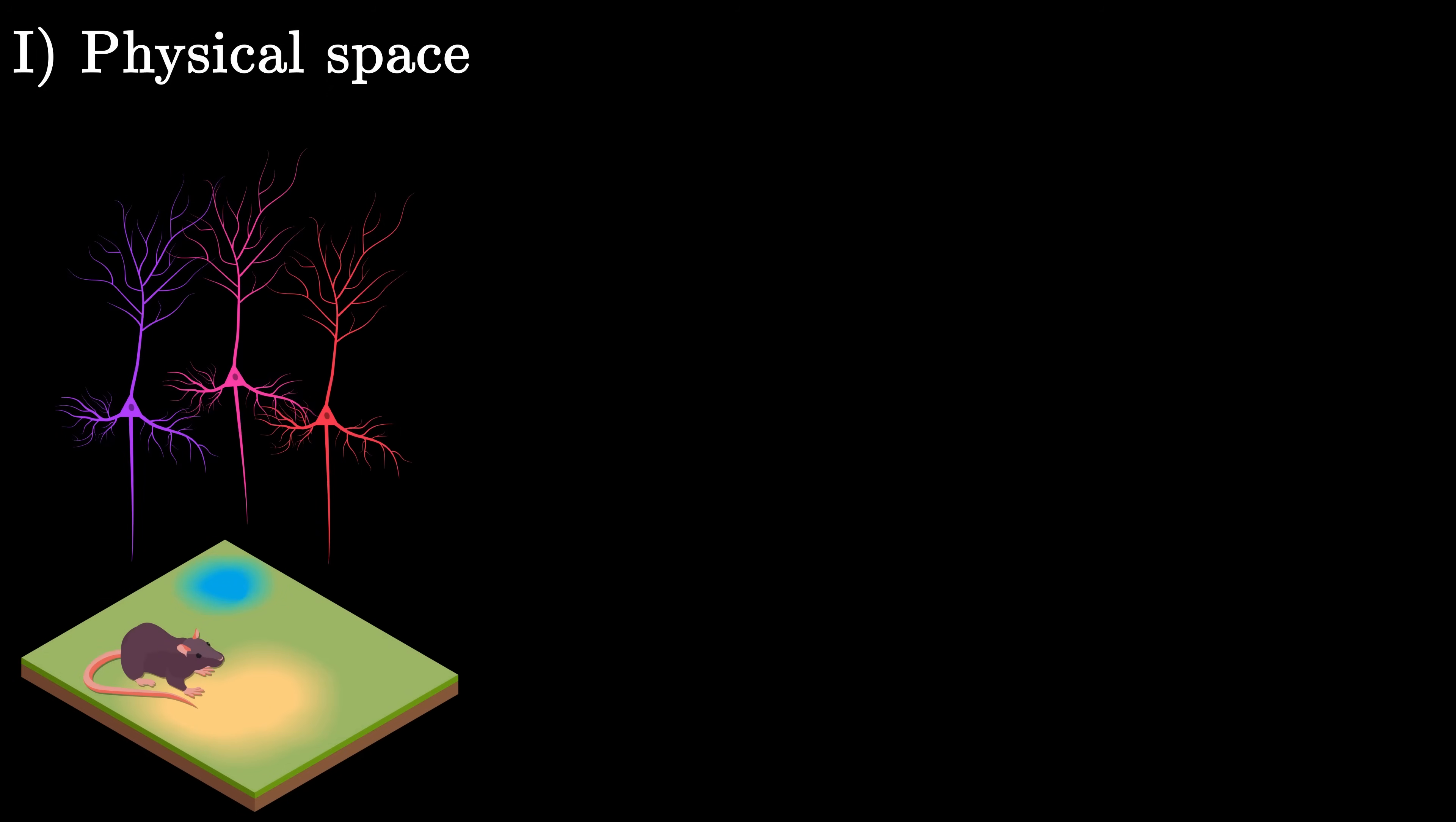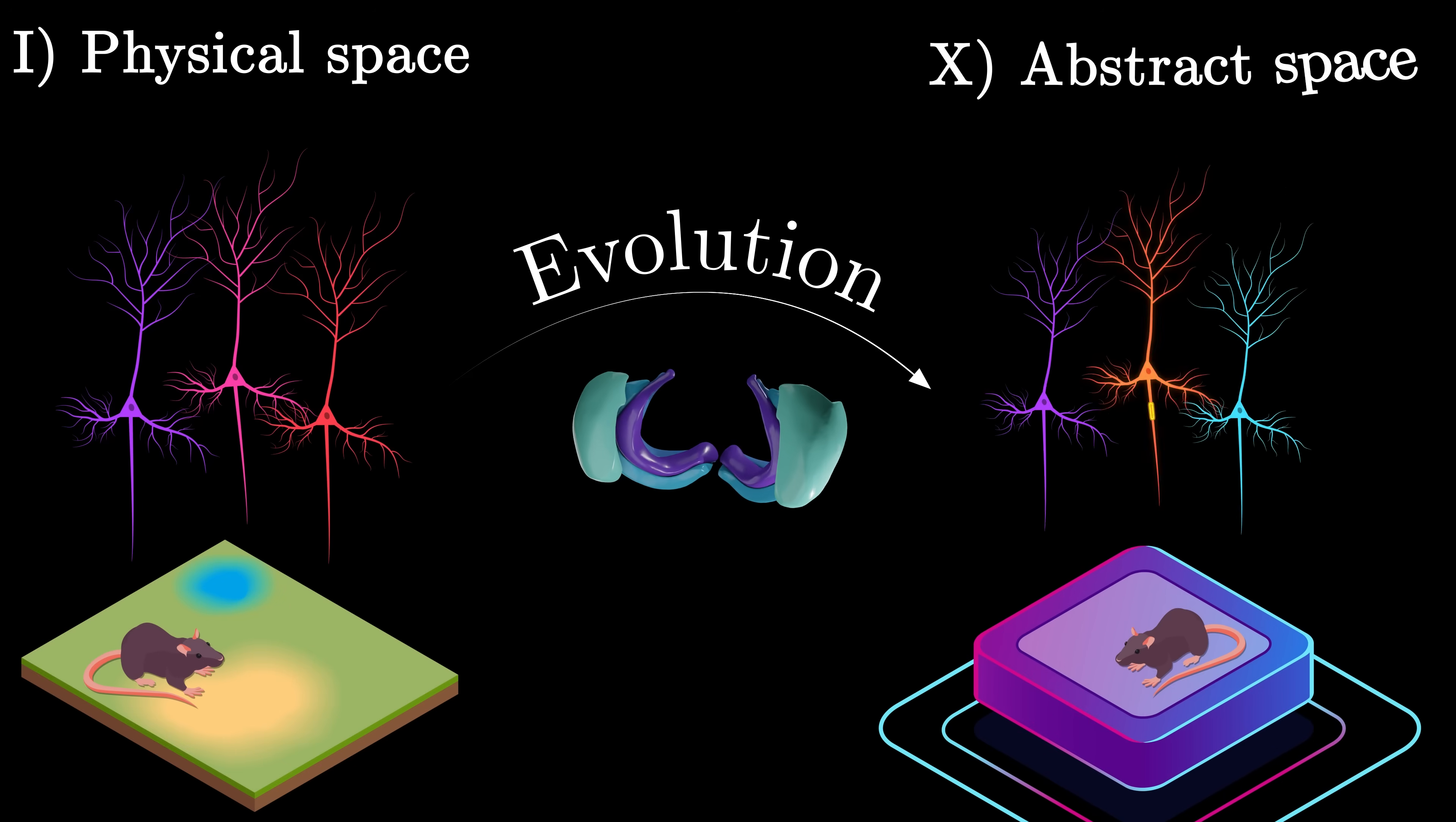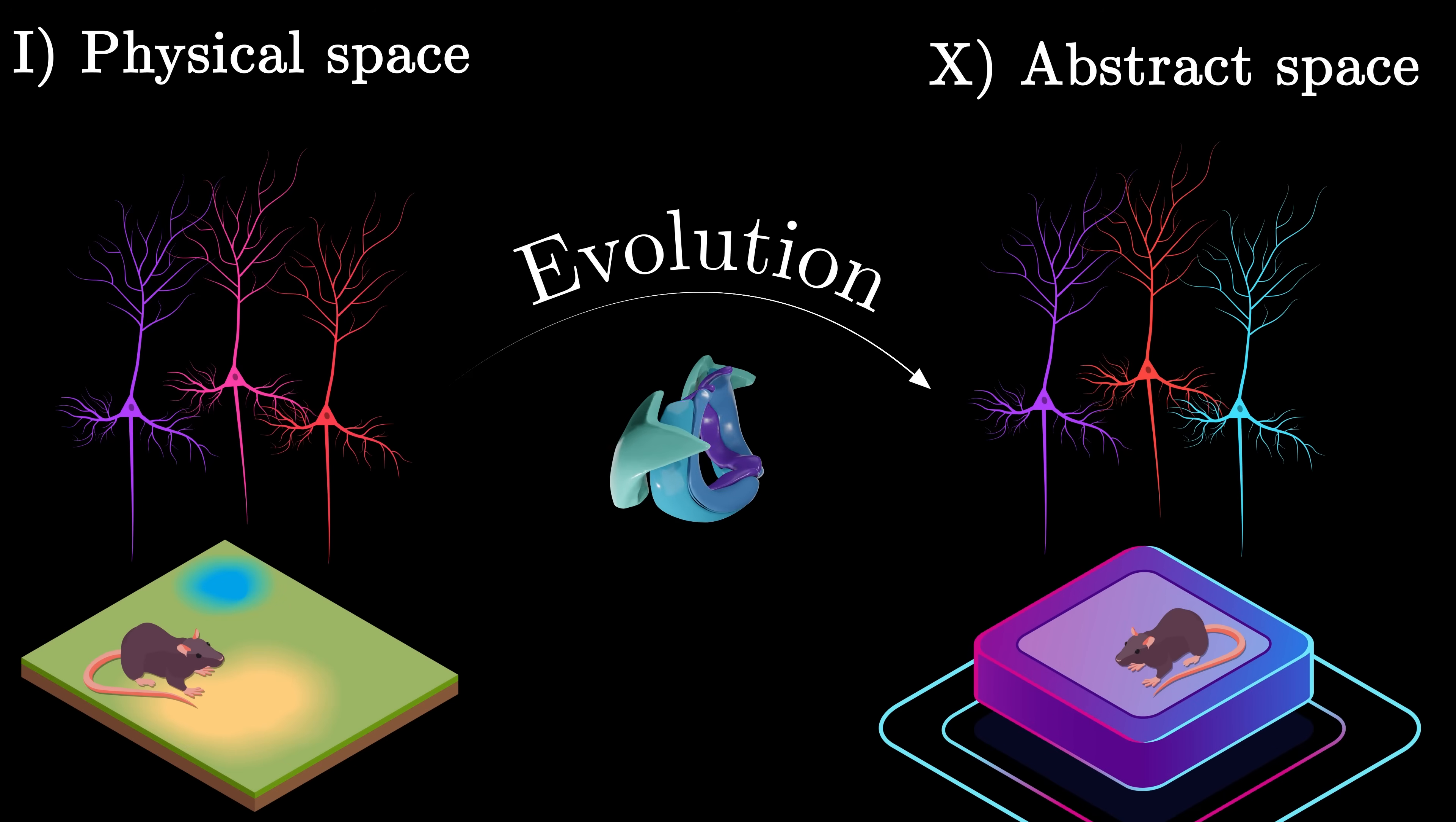It is believed that the initial function of the hippocampus, when it first evolved, was to carry out efficient computations in the environment. For example, to memorize the location of a nest, or build efficient routes to food sources. In other words, it operated in a purely physical space. But over the course of mammalian evolution, the hippocampus got repurposed to operate with other, more abstract variables, not just physical space.